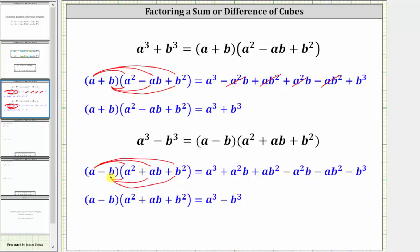Distributing negative b gives us minus a squared b, minus ab squared, and then minus b cubed. Simplifying, a squared b minus a squared b is zero, and ab squared minus ab squared is zero, giving us a product of a cubed minus b cubed, verifying the factoring formula.